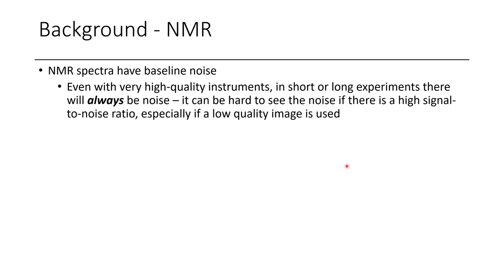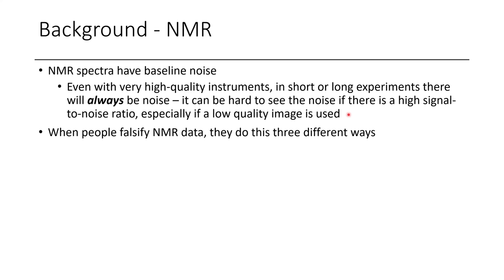If you haven't seen the different types of possible ways to falsify NMR data, this video provides several examples. When you have an NMR spectrum, even when you don't have a signal, you still have baseline noise. No matter how high-quality your instrument is, or how short or long your experiment is, there will always be background noise. It can be hard to see the noise in a low-resolution JPEG, so it's better to use high-fidelity images. Often you can embed a spectrum from Mestrenova — it will be high-res and you can zoom in indefinitely. It's even better if you include raw NMR files so people can open them themselves.